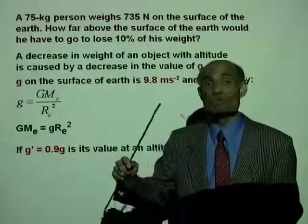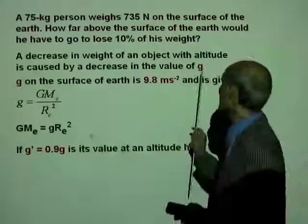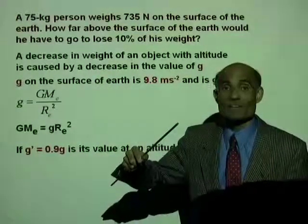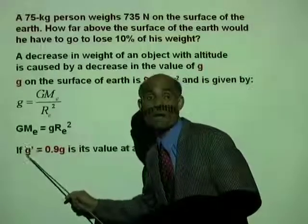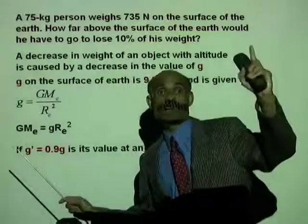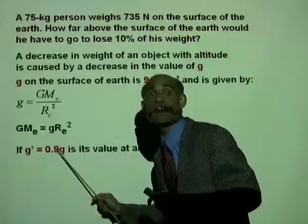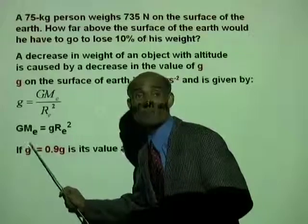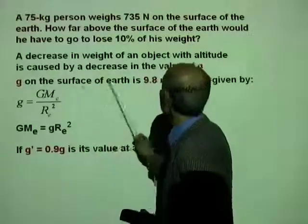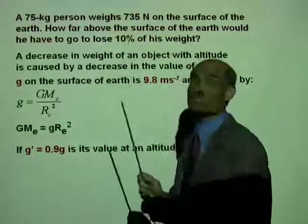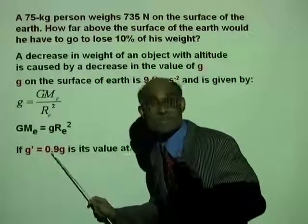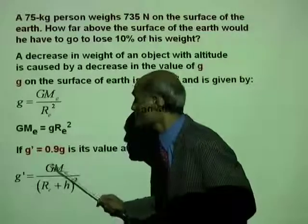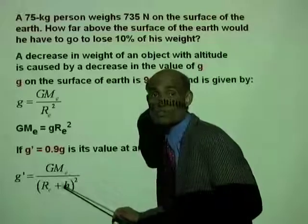If the person has to lose 10 percent of his weight, the value of g at that altitude will be 10 percent less than on the surface of the Earth. If g' is the value of g at that altitude, g' will be 0.9 times g on the surface. So g' at altitude H, which we need to find, will be 90 percent of g on the surface.